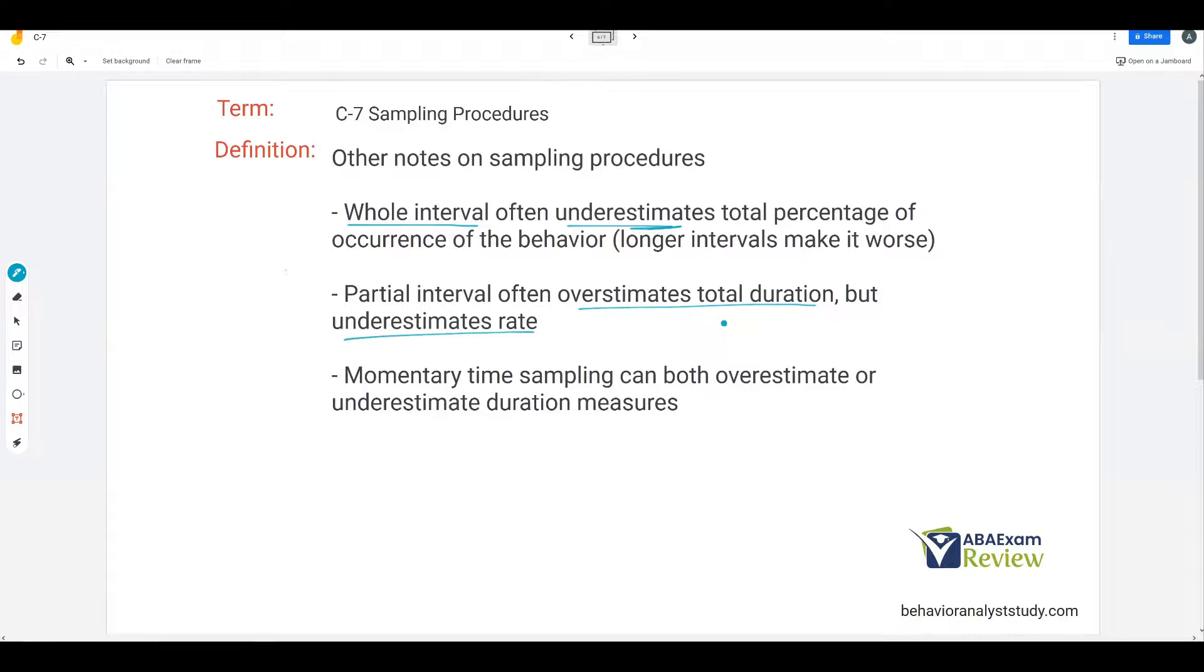Finally, momentary time sampling, you can overestimate or underestimate, depending on when the behavior occurs. If you have a 20-second interval, the behavior happens for 19 seconds. If it doesn't happen at the end of the interval, you're going to have a no-response data point, and it's going to misconstrue what's actually occurring there. Be smart with your discontinuous measurement. Trust your assessment. It has its place. It has a reason. But just be smart when using sampling and discontinuous measurements.